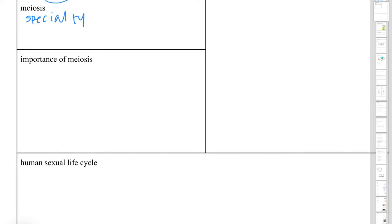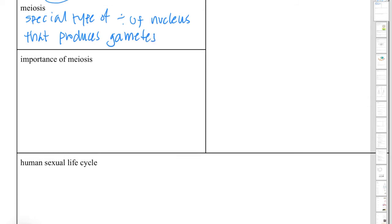Chapter 13 is about sexual reproduction. Sexual reproduction involves the process of meiosis, which is a special type of cell division — specifically a special type of division of the nucleus that produces what we call gametes. Meiosis must occur because in sexual reproduction there's a combination of genetic material from two different sources. In order to combine genetic material from two sources, you have to cut it in half first so it doesn't double every time you combine it. Gametes are cells that have half the number of chromosomes.